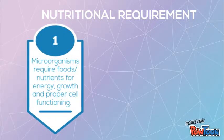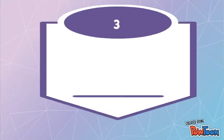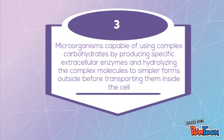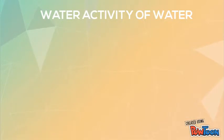Microbiome growth is accomplished through the synthesis of cellular components and energy. Microorganisms capable of using complex carbohydrates do so by producing specific extracellular enzymes and hydrolyzing the complex molecules to simpler forms outside the cell, then transporting them inside the cell.